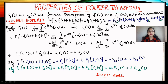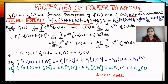In the linear property, we have two functions f₁(x) and f₂(x). If we apply the Fourier transform on f₁(x) and f₂(x) then the answers would be F₁(s) and F₂(s), and the constants a and b are treated as constants. The statement is: if a Fourier transform is applied on a·f₁(x) + b·f₂(x) then it can be simply written as a·F₁(s) + b·F₂(s).